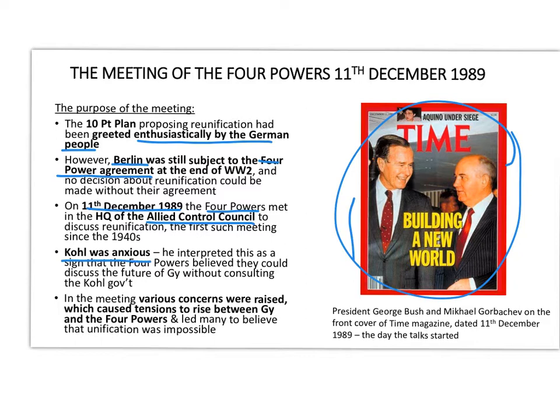Kohl was anxious; he interpreted this as a sign that the four powers believed they could discuss the future of Germany without consulting West Germany. In the meeting the four powers raised various concerns which caused tensions to rise between West Germany and the four powers, while the popular mood in East Germany at this time was very much in support of reunification.